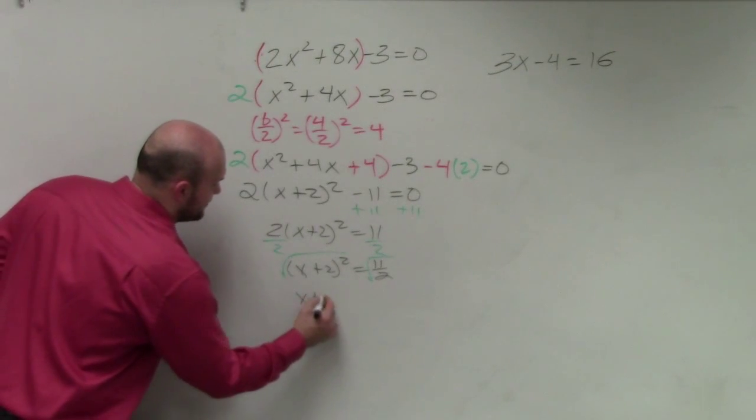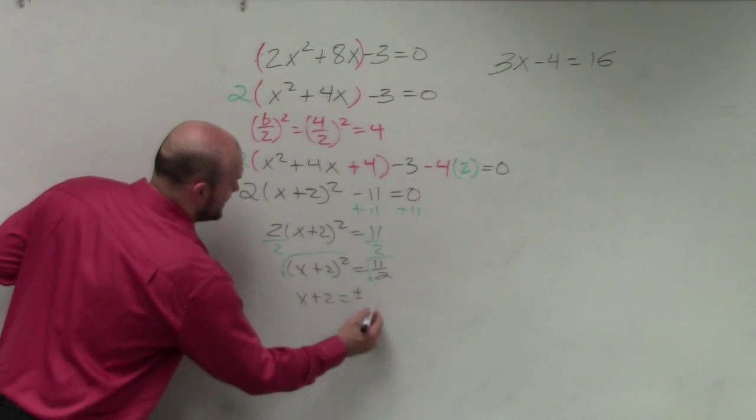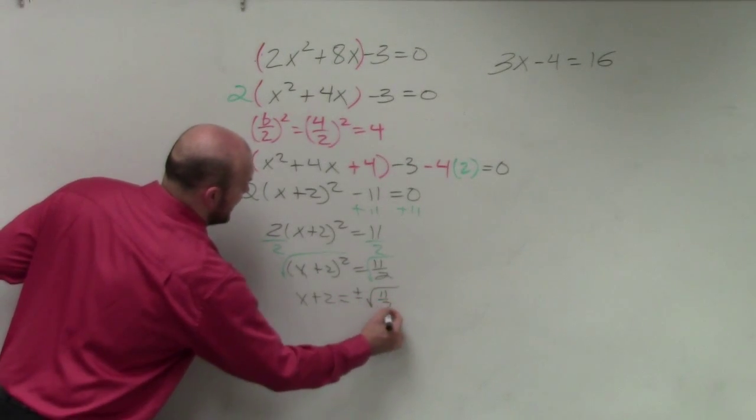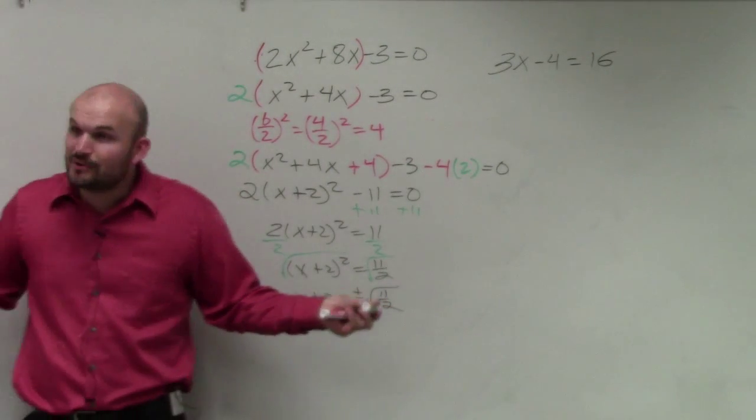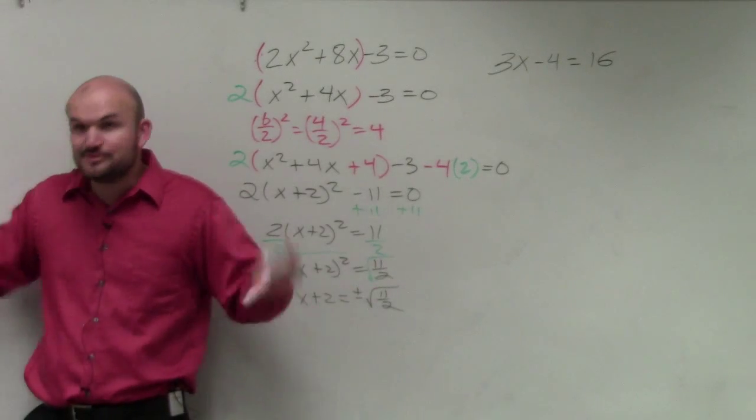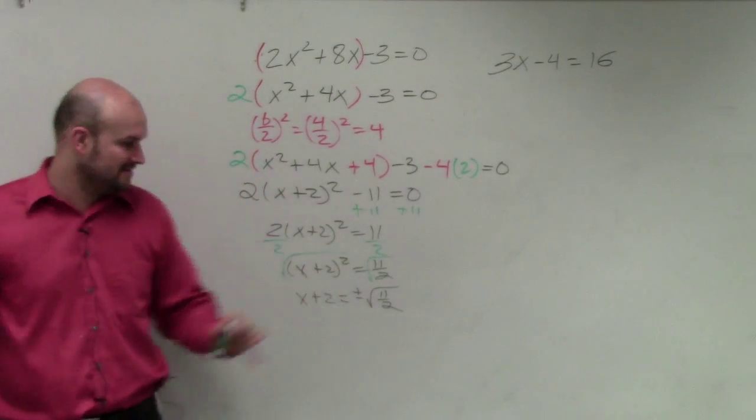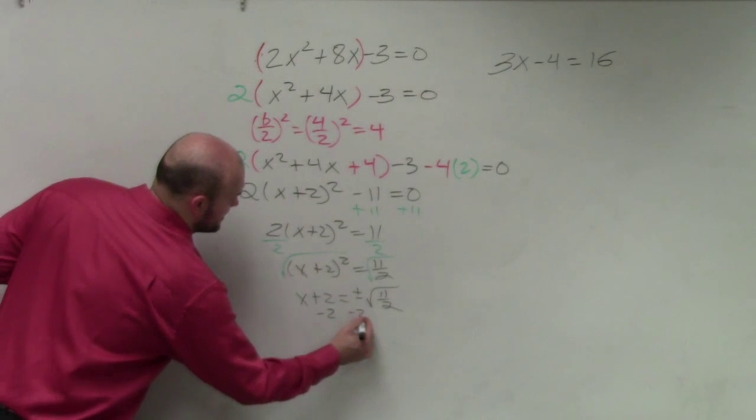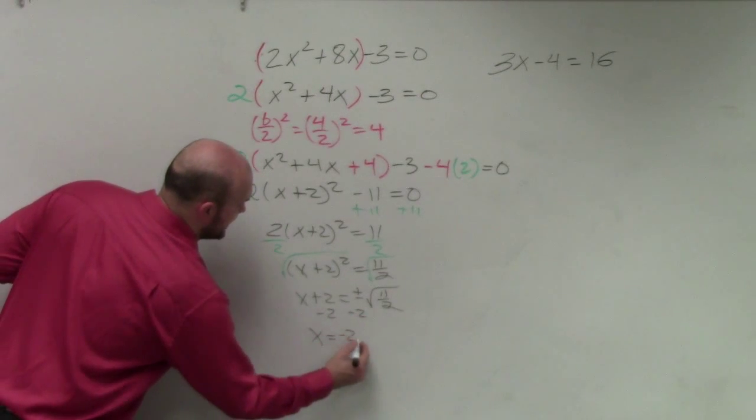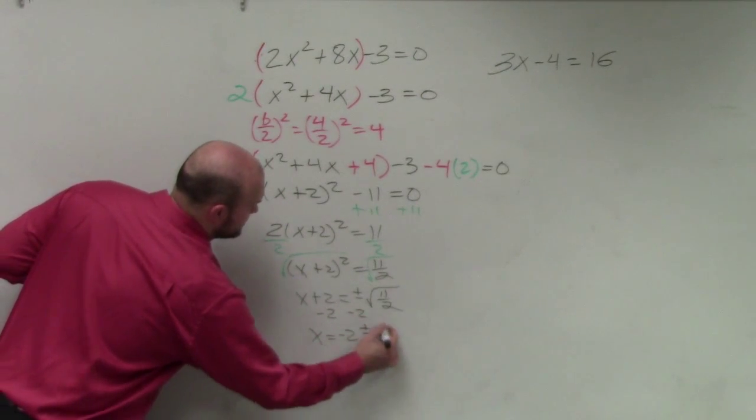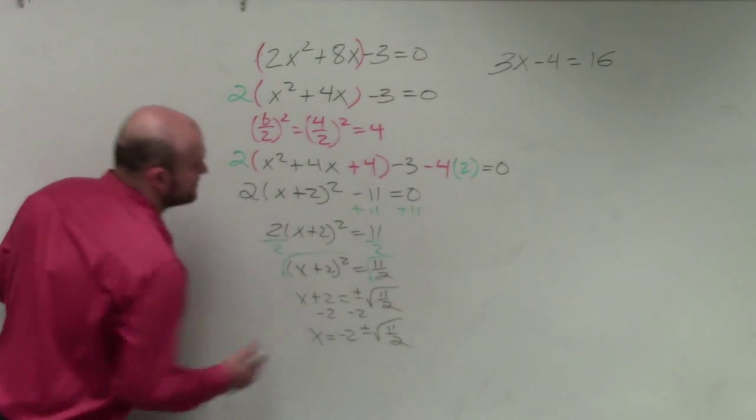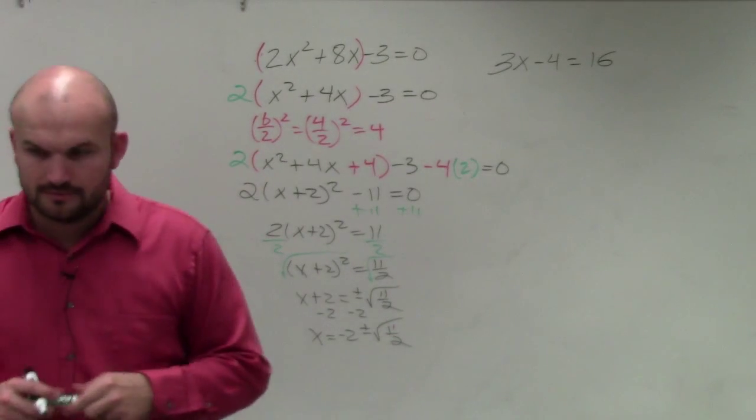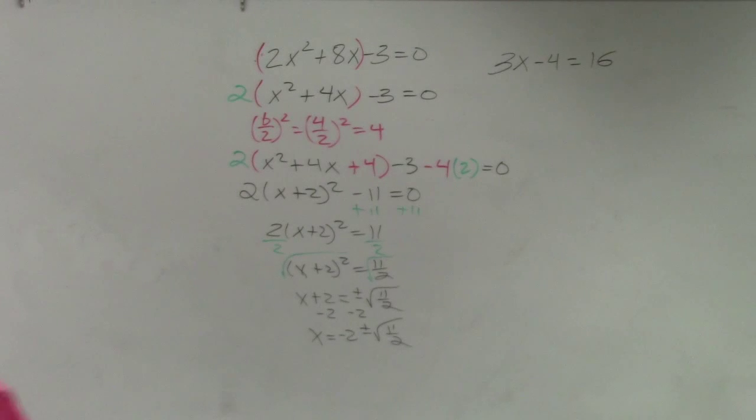So therefore, I have x plus 2 equals plus or minus the square root of 11 halves, which I can't take the square root of 11, or can I take the square root of 2? So I just leave it there. Then I subtract the 2 on both sides. So x equals negative 2 plus or minus the square root of 11 halves. Anybody have any questions?